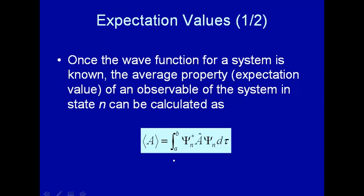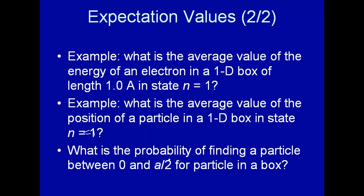In general you don't have to integrate over all space. You can integrate over just some region of space from A to B, and that will give you the average value of the observable in that particular region of space. So this will probably become more clear if we do some examples. What is the average value of energy of an electron in a 1D box of length 1 angstrom in state n equal 1?